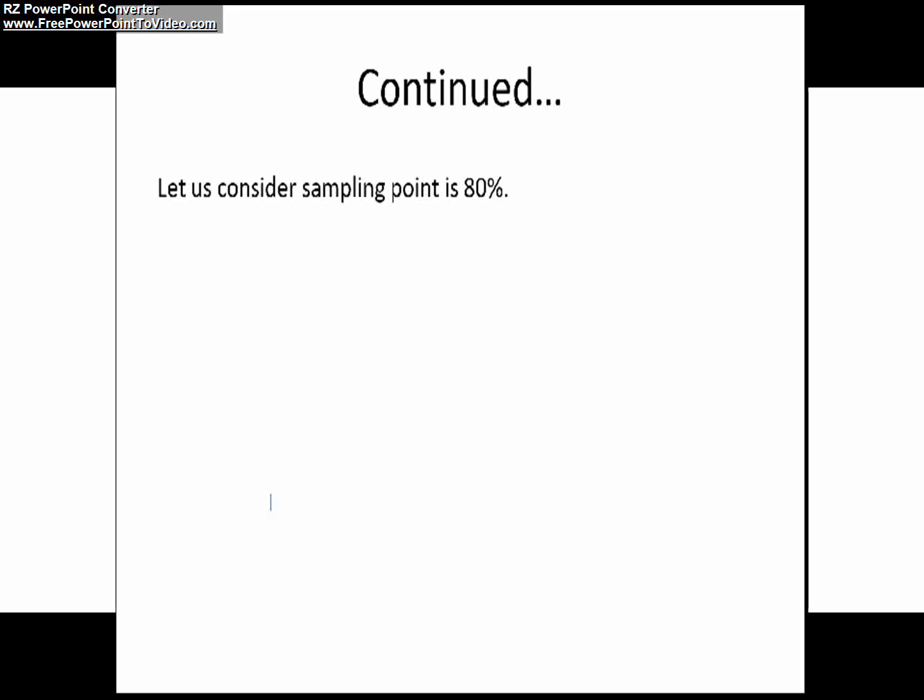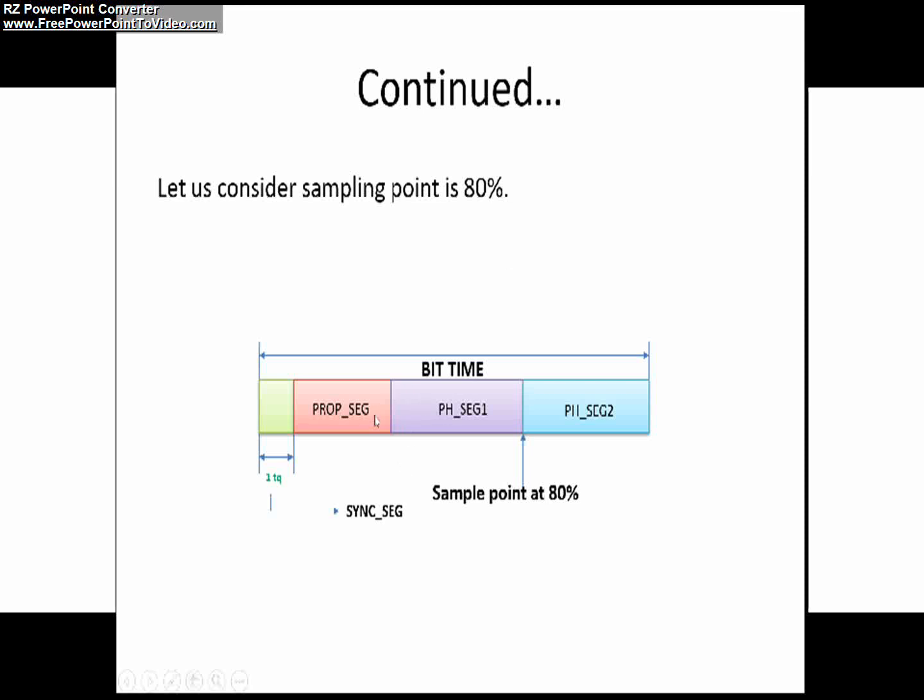Let us consider the case one as you can see in this slide. As you all know in a CAN the bit time is divided into four different kinds of segments: synchronization segment, propagation segment, phase buffer segment 1, and phase buffer segment 2. The sample point exists between end of phase buffer segment 1 and at the starting of phase buffer segment 2. As you can see in this slide the sample point is at 80%, as I already said it can vary from 80 to 90%.